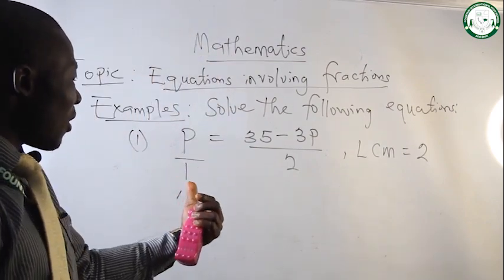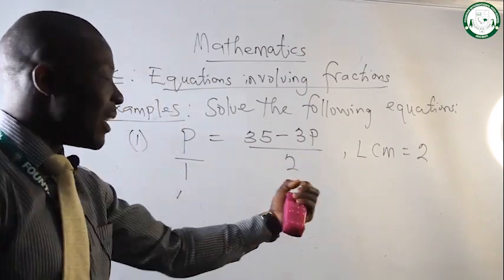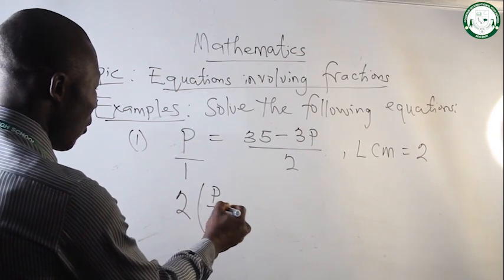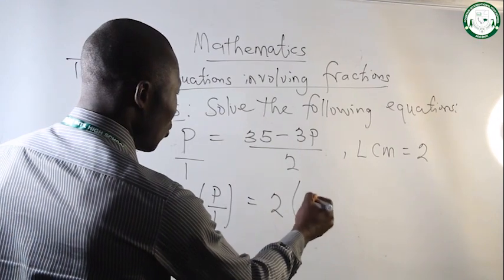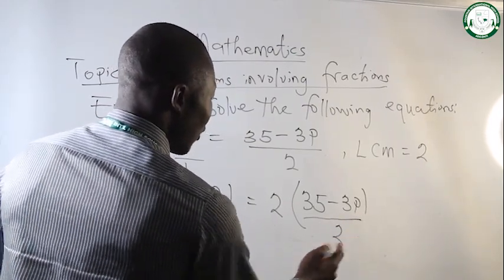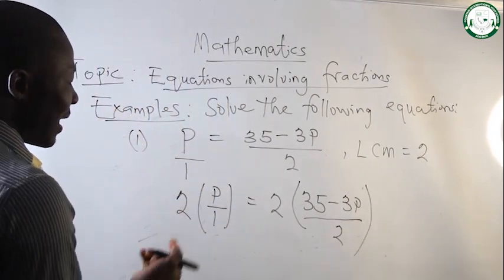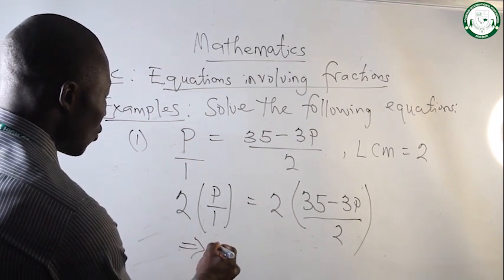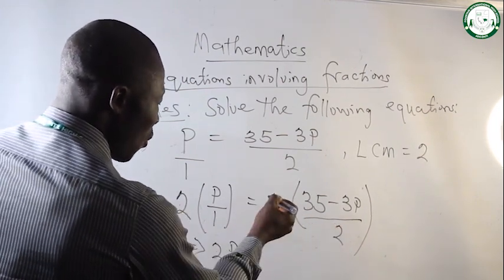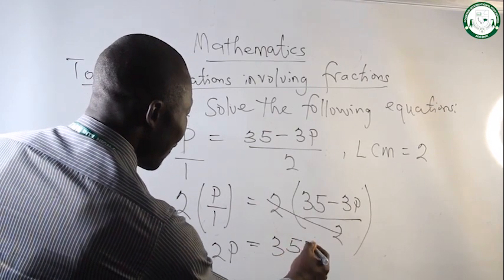Since the LCM equals 2, we will multiply each side by 2. This gives us 2 into P over 1, equals 2 into (35 minus 3P) all over 2. The 2 we used to multiply gives us 2P all over 1, which doesn't affect it. On the right side, the 2 and 2 cancel, leaving us with 35 minus 3P.